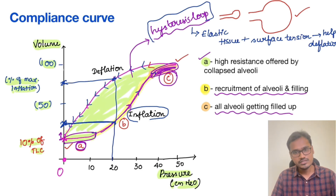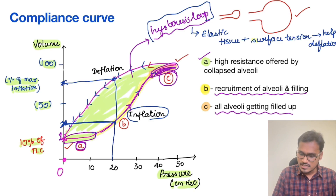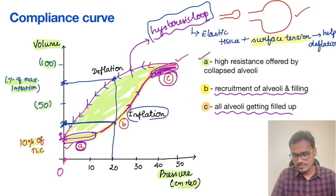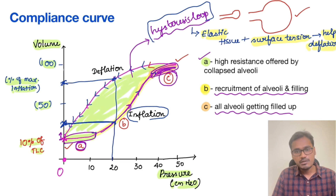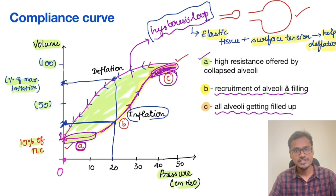This difference between inflation and deflation curves is the reason for the hysteresis loop. The surface tension contributes the major part of this loop. If we could eliminate surface tension, the compliance of the lung would obviously increase, because the major collapsing force opposing distension would be removed.